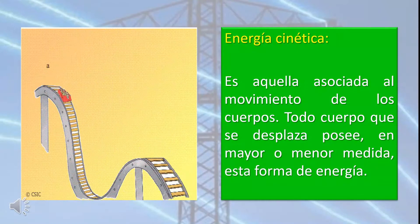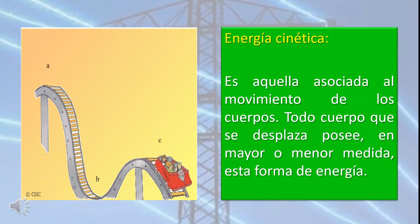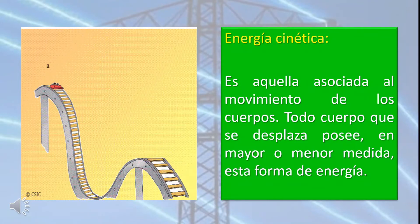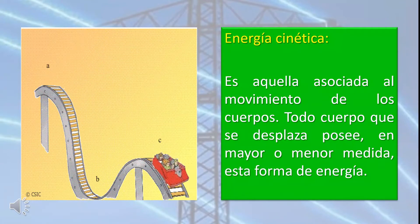Número 2: energía cinética. Es aquella asociada al movimiento de los cuerpos. Todo cuerpo que se desplaza posee en mayor o menor medida esta forma de energía. Por ejemplo, tiene energía cinética un ave que vuela, un ciclista que viaja por la calle, o como vemos en la imagen, un carrito que se mueve en una montaña rusa.